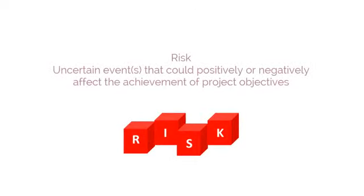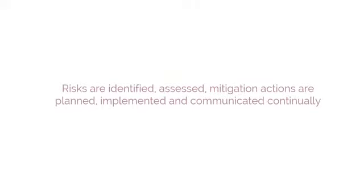We know that Scrum and most of the traditional project management methods define risk as uncertain events that could positively or negatively affect the achievement of project objectives. And also that the procedure for managing risk is quite similar — risks are identified, assessed, mitigation actions are planned, implemented, and communicated continually.